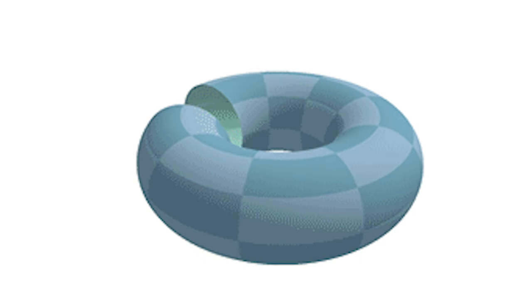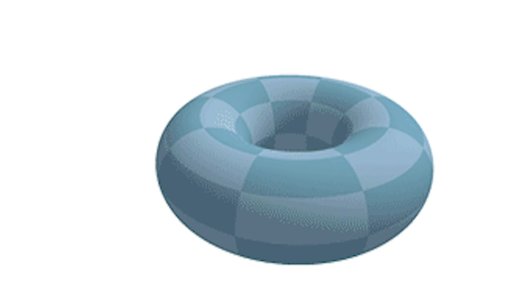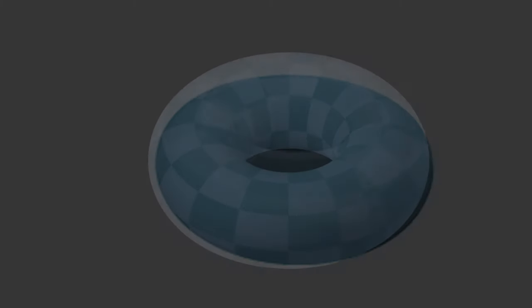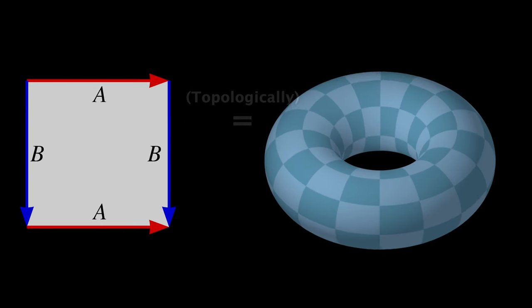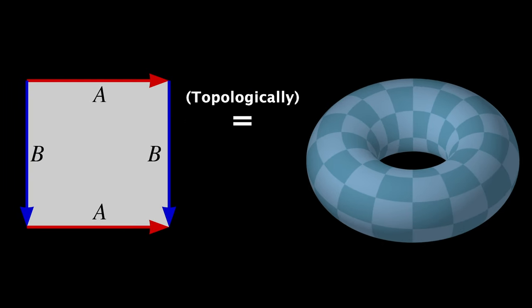But if this were made of some stretchy rubber, and I could do that connection, then we'd be left with a torus, as you can see here. So with that connection, the arrows would line up. And this is why the universe of the Asteroids game can be thought of as a torus — because they're topologically the same.